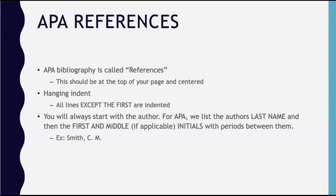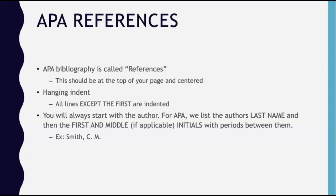An APA bibliography is called references. The word 'References' with a capital R should be in bold and centered at the top of your page. Do not put it in quotation marks or underline it. Once you've written 'References' at the top, press the Enter or Return key on your keyboard once. Change the alignment to Left Justified and turn off the bold setting. Then begin listing your references.